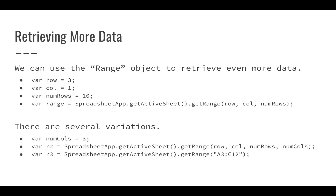For example, SpreadsheetApp.getActiveSheet().getRange(row, col, numRows, numCols) — passing in row 3, column 1, 10 rows, and 3 columns — would start at row three, column A, and retrieve columns A, B, and C from row three all the way down to row twelve. Alternatively, you can use range notation like 'A3:C12', which gives the same values using the familiar Google Sheets range notation.